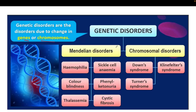Genetic disorders are mainly categorized into two classes. The first one is the Mendelian disorder and the other one is the chromosomal disorder. Examples of Mendelian disorders include hemophilia, color blindness, thalassemia, and sickle cell anemia. For chromosomal disorders, the most common are Down syndrome, Klinefelter syndrome, and Turner syndrome.